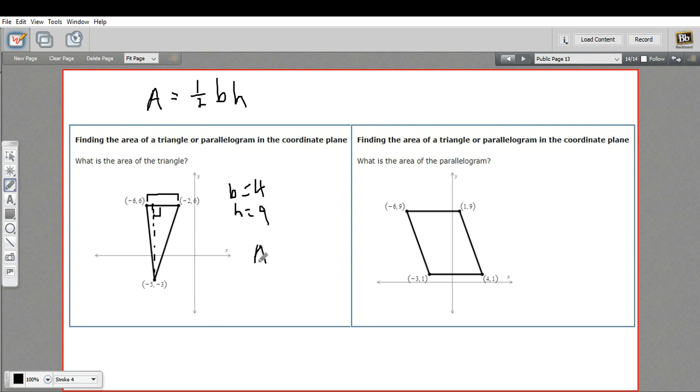So now we can go ahead and plug everything into the formula. The area is one-half the base times the height, and one-half of 4 is 2 times 9. So our area equals 18, and we'd just say square units here.